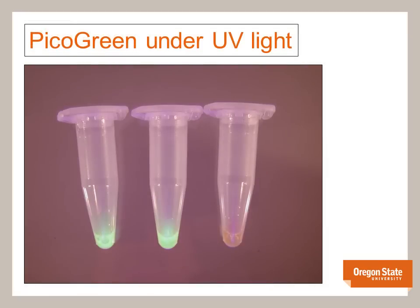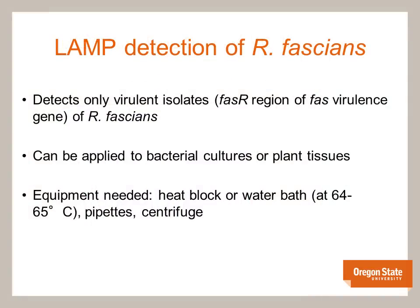When viewed under black or UV light, the samples which tested positive for Rhodococcus fascians will fluoresce brightly, while negative samples will not fluoresce. We tested 20 LAMP primer sets developed using the EIKEN program. The most reliable set was selected for further testing. This primer set is specific to the FAS-R region, a transcriptional regulator that acts on expression of FAS genes. Mutants lacking FAS-R are not capable of causing disease, hence this gene is essential for pathogenicity. We also developed an additional set of loop primers, but found these to result in an unacceptably high rate of false positives, so we are no longer using them.